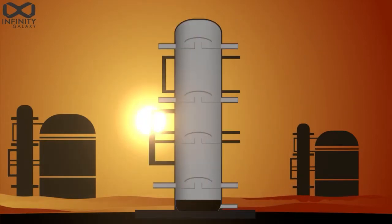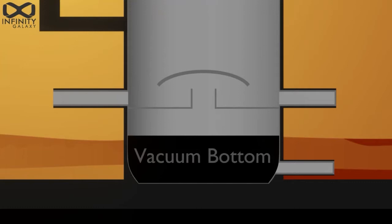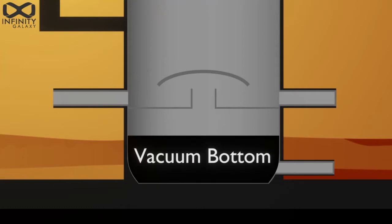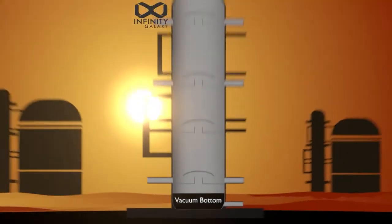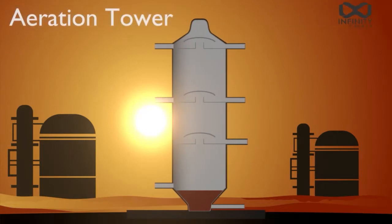By entering the aeration tower, the vacuum bottom is exposed to oxygen and nitrogen, loses its hydrogen as much as possible, and gets heavier. The final outcome of this process is different types of penetration grade bitumen.